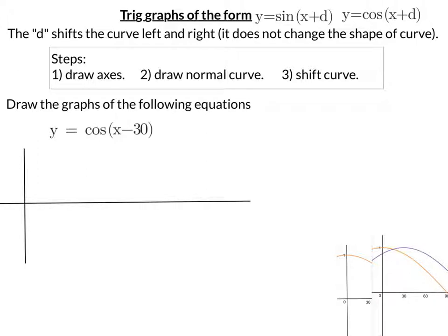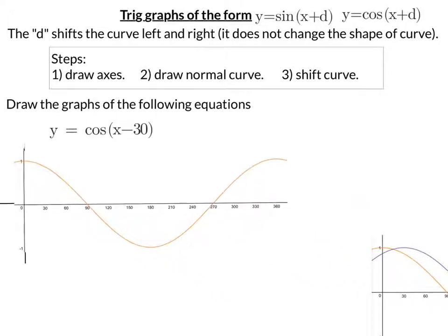So we've got y equals cos x minus 30. So draw your axes. Draw the normal curve. So in this case, let's draw cos x.